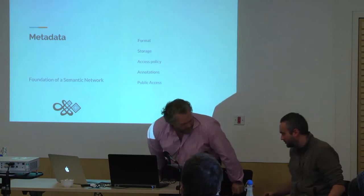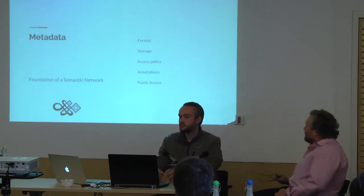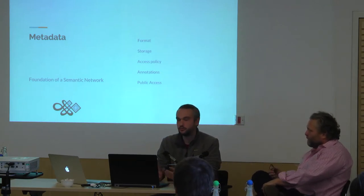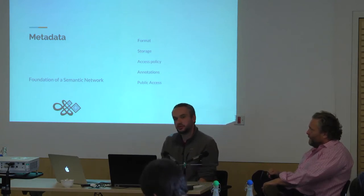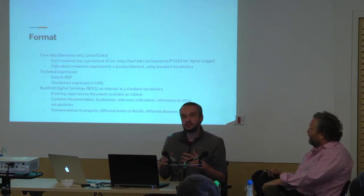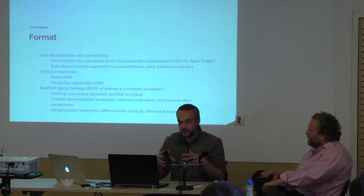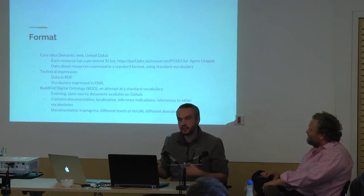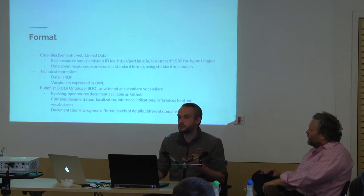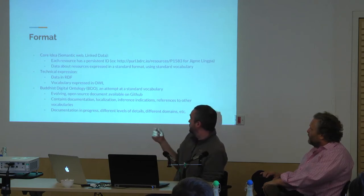I'll talk about the way we design our metadata in our new platform. Due to the scale of the data and our idea of a semantic network — where all entities should be linked together and also linked to other datasets — we think of our data as linked data. A core requirement is that every resource has a persistent ID in the form of a URL. This URL, for instance, is the ID of a text by a Tibetan person in our database and it could stay there forever.